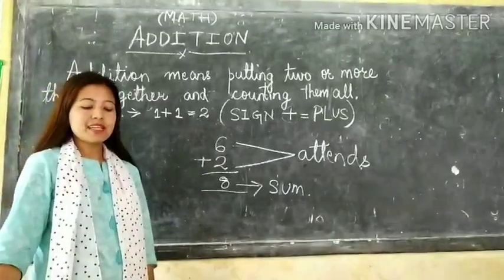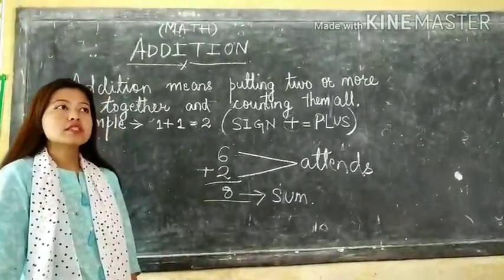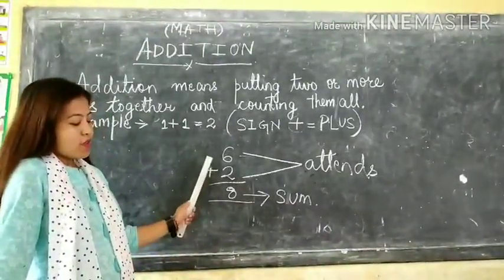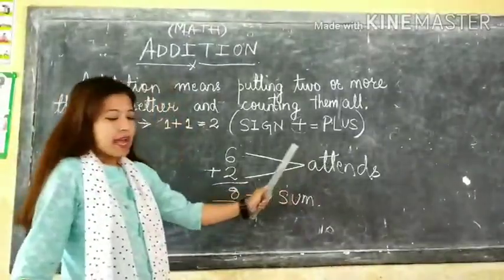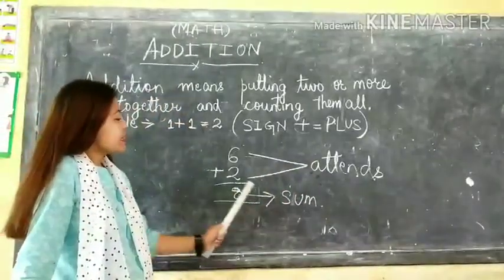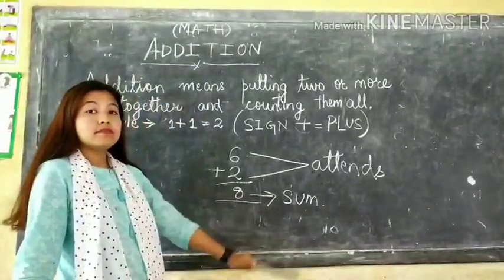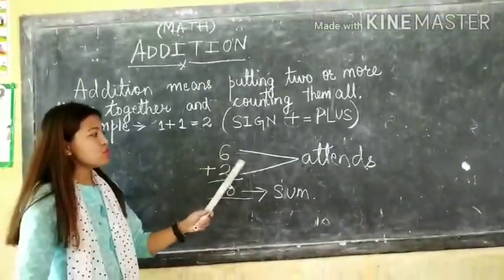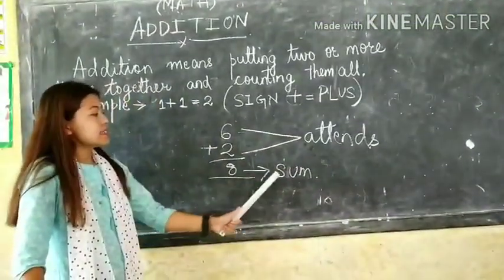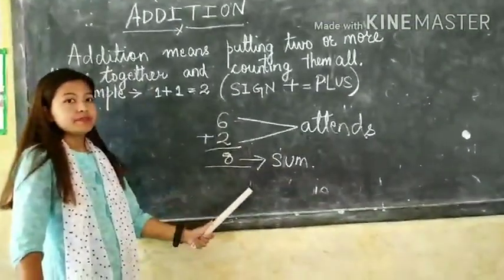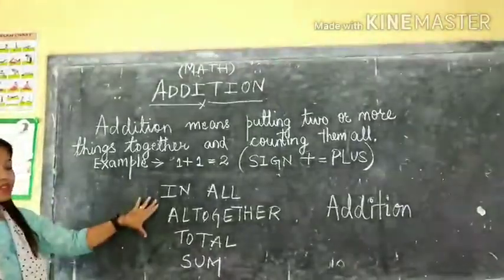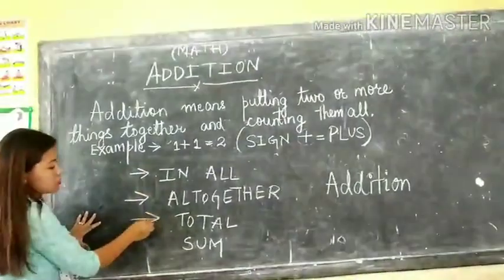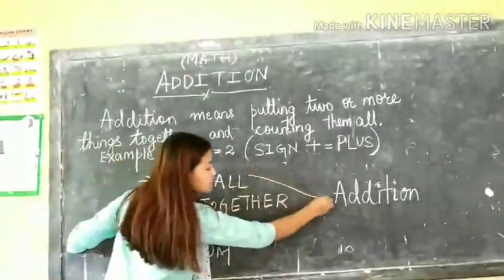Now let me tell you what do we call the terms used in addition. The numbers that we add are called addends, and the total we get after adding is called sum. In the example we solved, 6 plus 2 are the addends, and 8 is the sum of these 2 numbers. Remember these words: all, all together, total, sum - these imply the term addition.